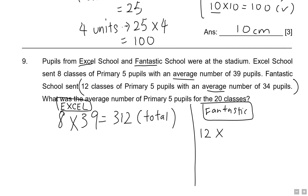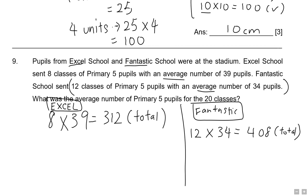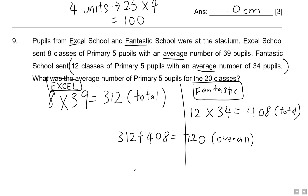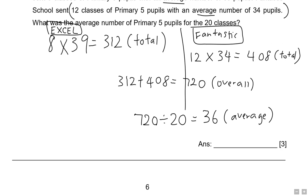Fantastic School's total: 12 × 34 = 408. Now we have 408 for Fantastic and 312 for Excel. Adding the two schools gives an overall total of 720 pupils across 20 classes. To find the average number of P5 pupils for all 20 classes, divide: 720 ÷ 20 = 36. So the average is 36.